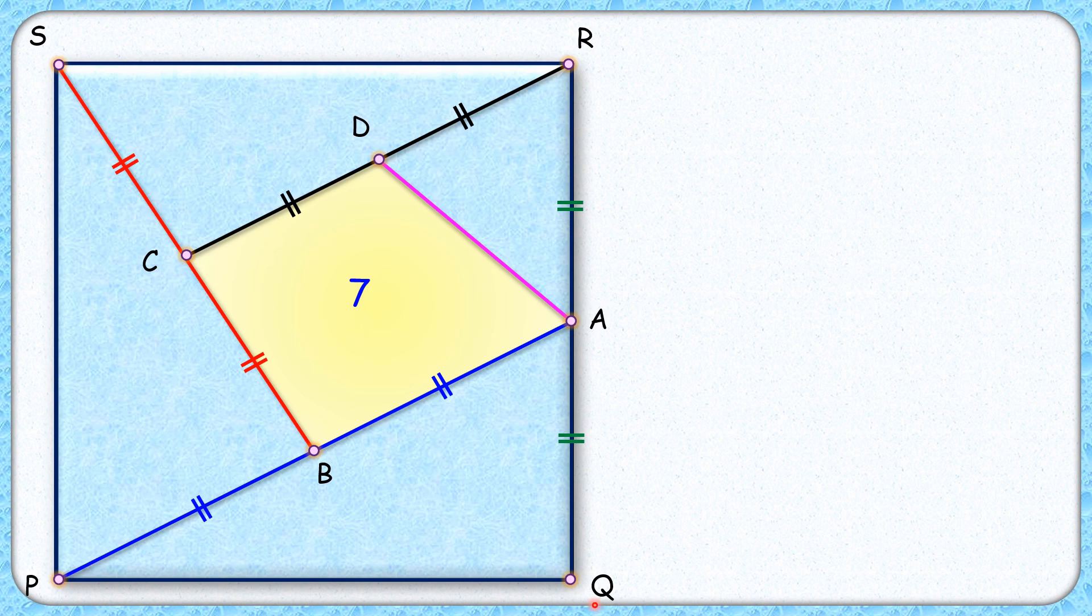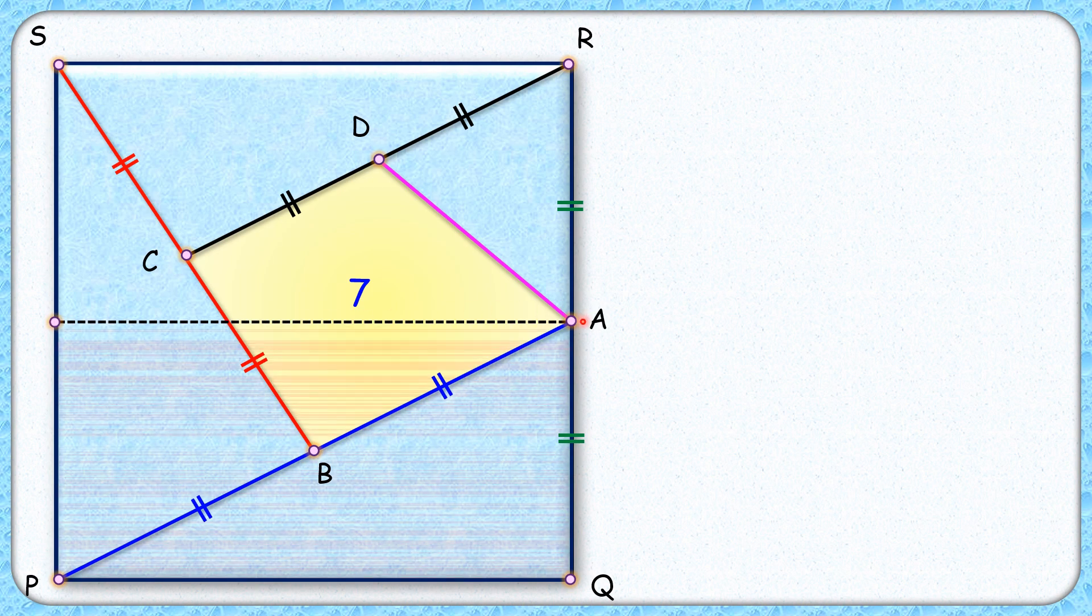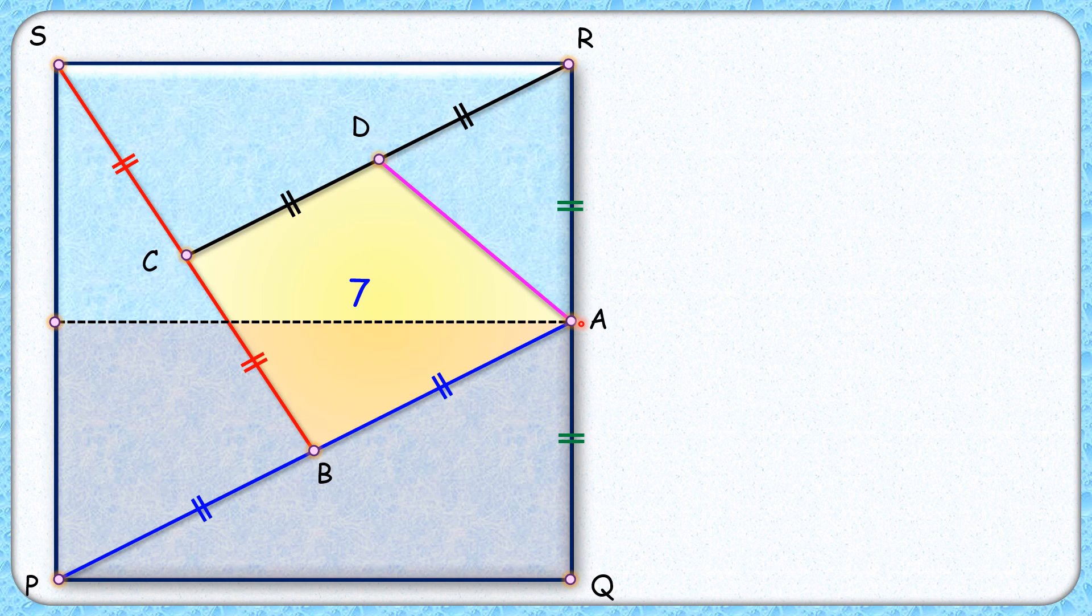So first let's start with triangle PQA. For that we are dividing the square into two equal parts. So area of this rectangle is half the area of the square.